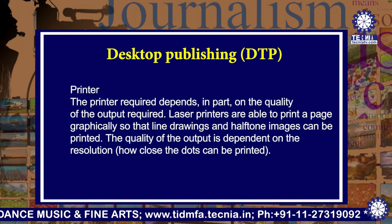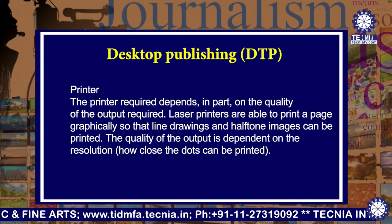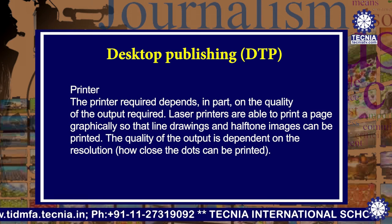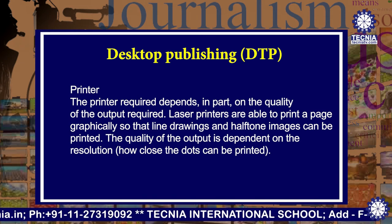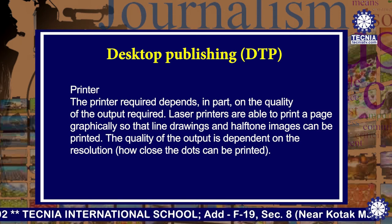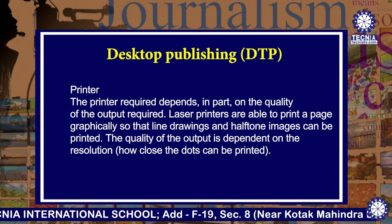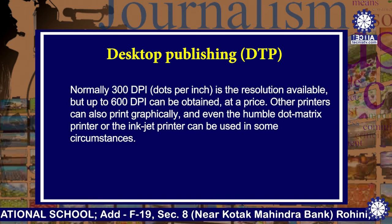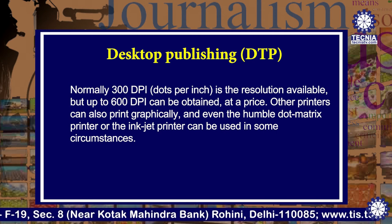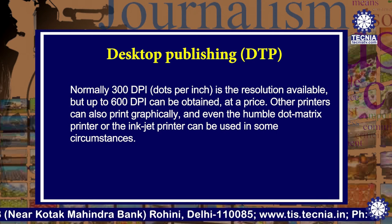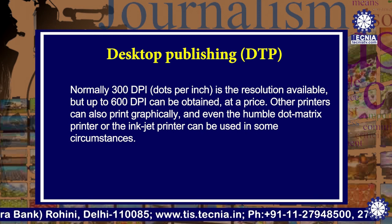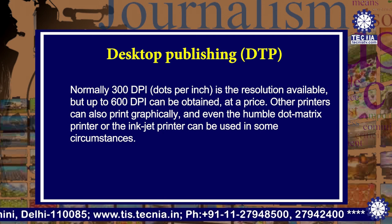Now we are going to talk about the printer. The printer required depends in part on the quality of the output required. Laser printers are able to print a page graphically, so line drawings and halftone images can be printed. The quality of output is dependent on resolution — how the dots can be printed in proper pixels. Normally 300 DPI is the resolution available, but up to 600 DPI can be obtained at a very good price. Other printers, including the humble dot matrix printer or inkjet printer, can also be used in some circumstances.